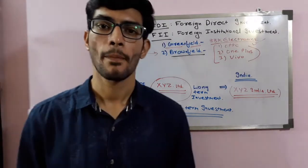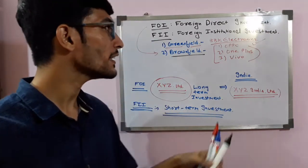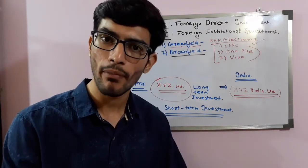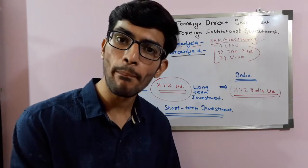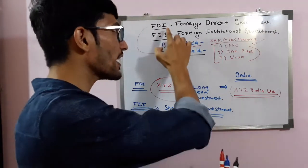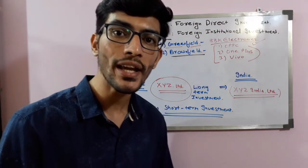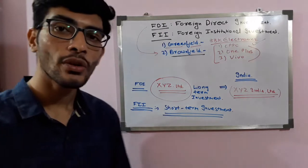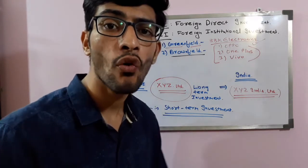Now let's talk about some pros and cons of FDI. FII is straightforward — it is Foreign Institutional or Indirect Investment where we simply bring money and invest in the share market of a country. FII does not impact the country directly, but FDI impacts a country directly because companies are setting up industries and hiring employees. So let's discuss the advantages and disadvantages of FDI.